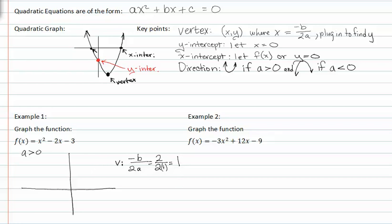If we know what our vertex is for x, our coordinate point will be (x, y). So far we know that x is 1 and we need to find y. We plug 1 into our function, so f(1) is equal to 1 - 2 - 3. This gives us -4, so that's our vertex.